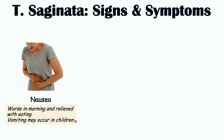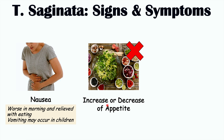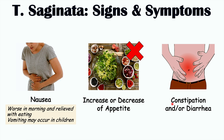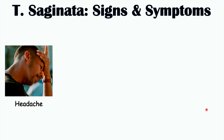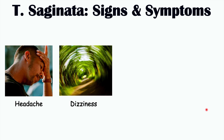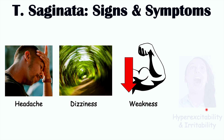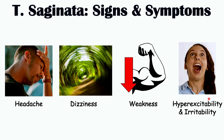Vomiting may occur in children but is unlikely in adult patients. Patients can also experience increase or decrease of appetite, as well as constipation and/or diarrhea. Some patients experience more rare findings including headache, dizziness, weakness, and hyperexcitability and irritability — more common in children. Children are generally more likely to experience signs and symptoms of a tapeworm infection than adult patients. They may also mount a fever in response to the infection.